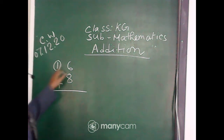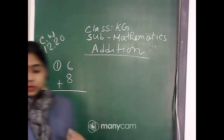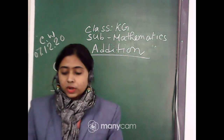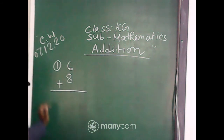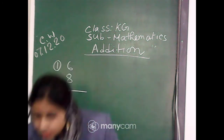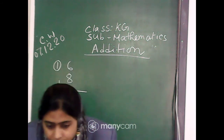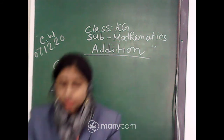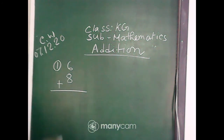So, first one is 6 plus 8. Which one is the small number? 6 is the small number. Okay, first one is 6 plus 4.